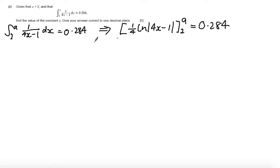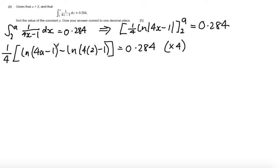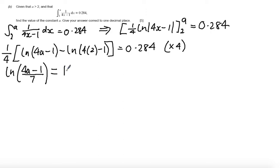Substituting the bounds and taking the quarter out as a common factor, I get inside the brackets: log of (4a minus 1) minus log of (4 times 2 minus 1). Multiplying both sides by 4 to remove the quarter, then using laws of logs to simplify: since it's a subtraction we divide, giving log of (4a minus 1) over 7, equal to 4 times 0.284 which is 1.136.